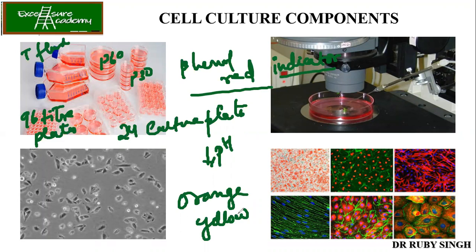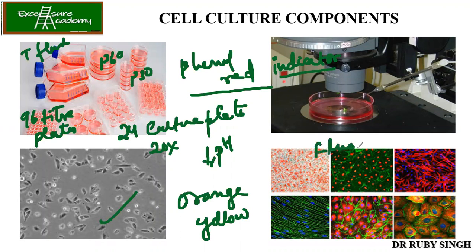Under a microscope at around 20x magnification, you can see the cells by placing the plate directly under the microscope and visualizing them. The figures shown here represent different types of cells — these are fluorescence images taken using a fluorescence microscope.